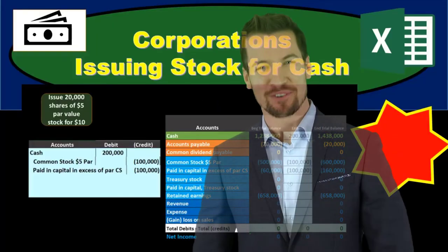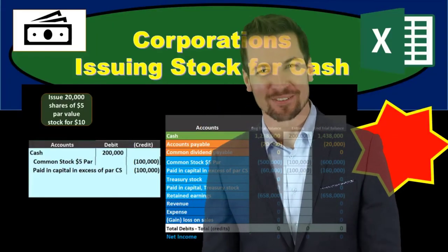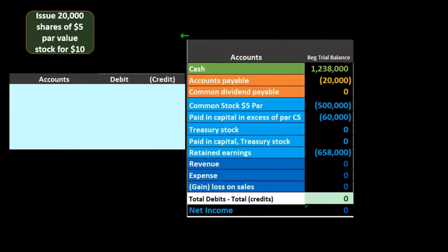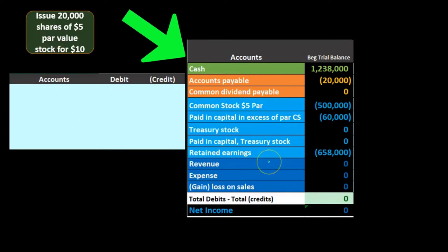In this presentation we will take a look at a journal entry for a transaction for a corporation issuing stock for cash. We're going to go through a scenario which will look like this — we have the information up top. We're going to record a journal entry in the general journal, then we'll post that to a trial balance so we can see a quick result of what will happen.